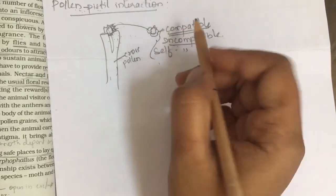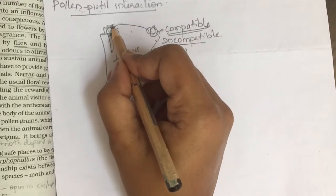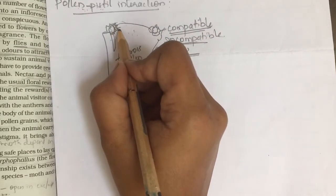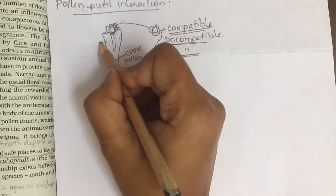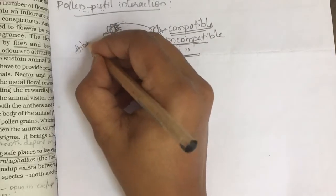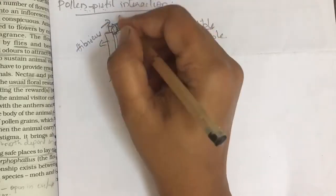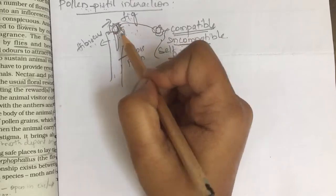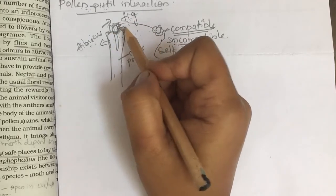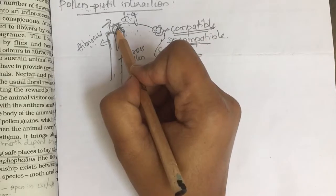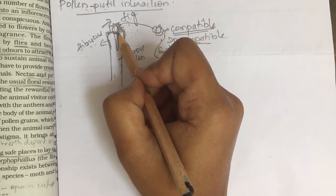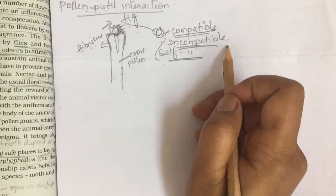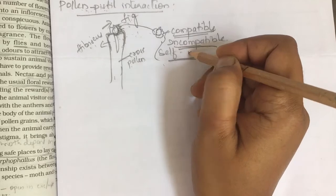Incompatible can also occur when pollen comes from a different species. For example, imagine hibiscus — but the stigma of hibiscus receives a pollen from a fig plant. These are two different species. Whether it will germinate? The stigma does not allow it to germinate because the pollen dropped on its stigma is of a different species, not the same species. For that also we call it incompatible. So compatible, incompatible, and self-incompatible are the three cases.